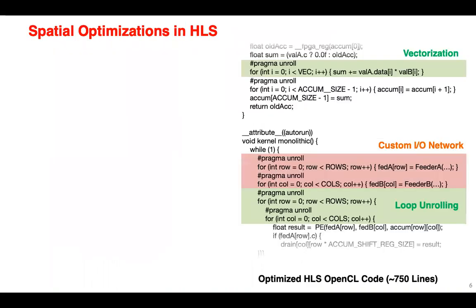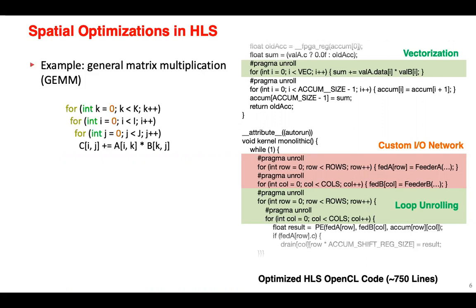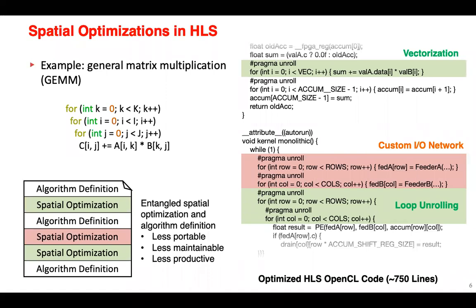Another advantage of HLS is that you can capture all the spatial optimizations mentioned before. On the right-hand side is a code snippet from an optimized HLS code, highlighting all the spatial optimizations used — for example, factorization, custom IO network, and loop unrolling. However, it might not be clear what this program is doing — it is actually just a very simple general matrix multiplication. The reason the program is hard to understand is because the algorithm specification is closely entangled with spatial optimization, making our program less portable, less maintainable, and also less productive.